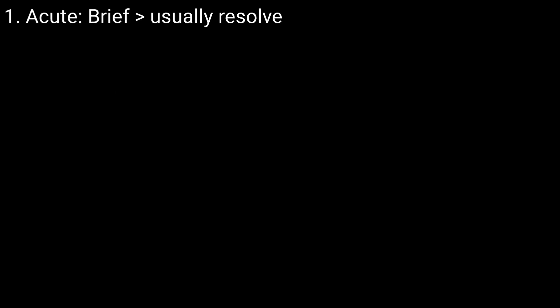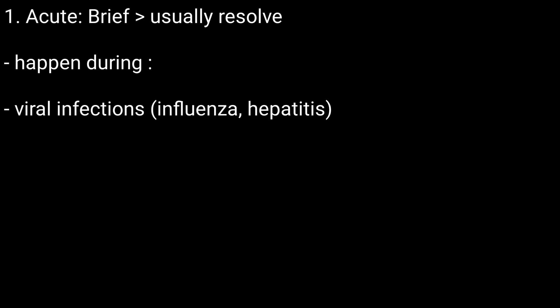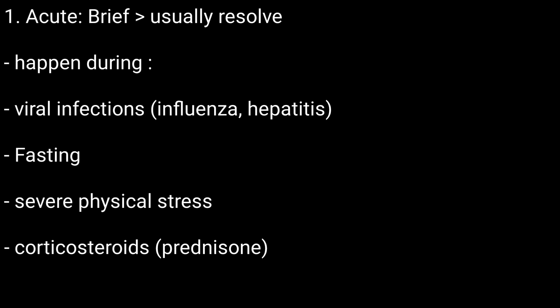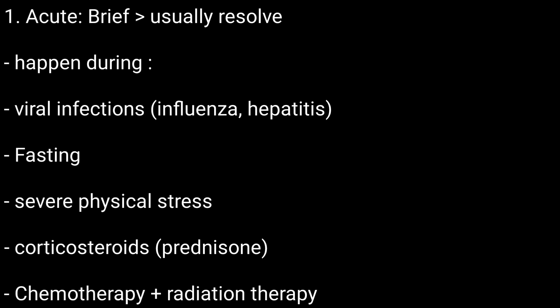The first is acute — occurring briefly during certain conditions and then usually resolving. The number of lymphocytes can temporarily decrease during certain viral infections, fasting, times of severe physical stress, use of corticosteroids, and chemotherapy and radiation therapy for cancer.